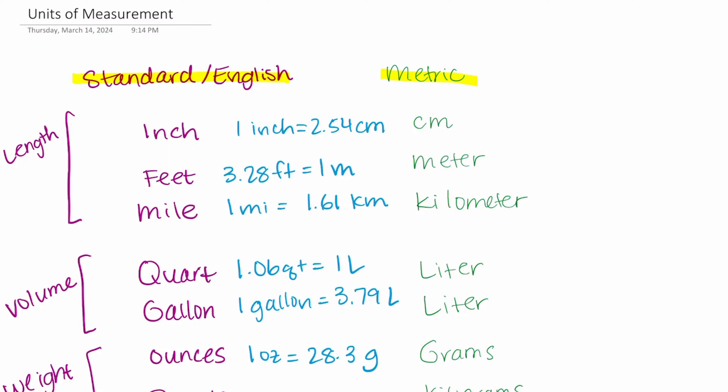When we're measuring length, in standard measurements we have inches, feet, and the mile. In the metric system there's centimeter, meter, and kilometer. When you're converting from the standard into the metric, here are some really important conversions that you'll want to memorize. One inch is equal to 2.54 centimeters. 3.28 feet is equal to one meter. One mile is equal to 1.61 kilometers.